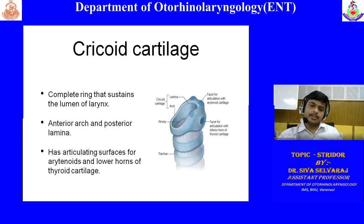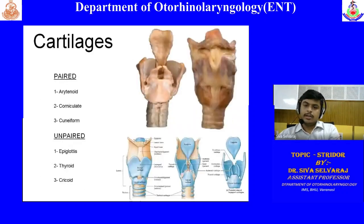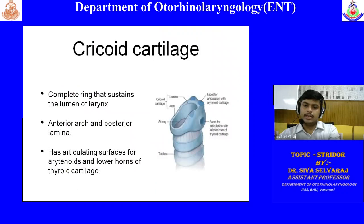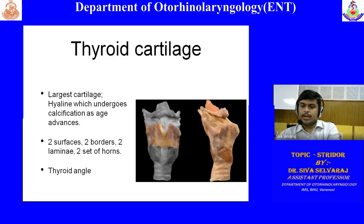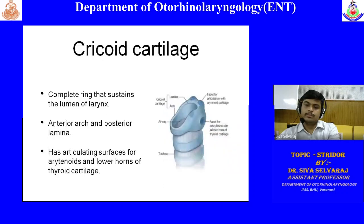The cricoid cartilage has two articulating surfaces: on the superior aspect of the lamina, the arytenoid cartilage sits and forms the cricoarytenoid joint. On the posterolateral surface of the cricoid lamina, there are articulating surfaces for the inferior horns of the thyroid cartilage — forming the cricothyroid joint.